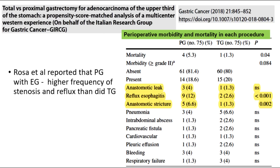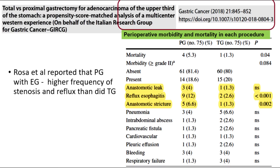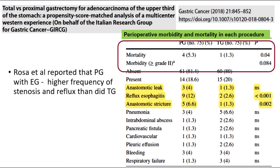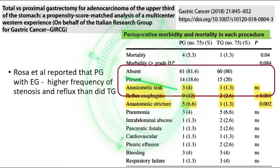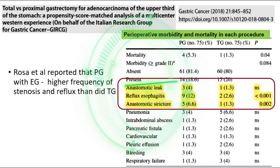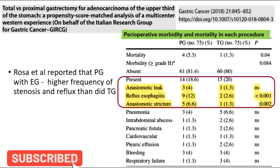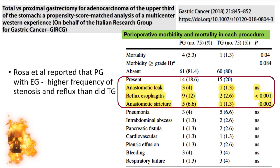Another important study by Rosa et al., published in Gastric Cancer in 2018, studied total versus proximal gastrectomy for adenocarcinoma of the upper third of the stomach — a propensity score-matched analysis of a multicentral western experience on behalf of the Italian Research Group for Gastric Cancer. For proximal one-third gastric cancer, total gastrectomy with Roux-en-Y and proximal gastrectomy with esophagogastrostomy were compared. The anastomotic leak was higher in the proximal gastrectomy group, though not statistically significant, but reflux esophagitis and anastomotic stricture were both statistically significant in the proximal gastrectomy with esophagogastrostomy group.